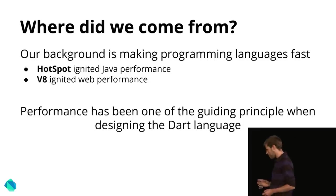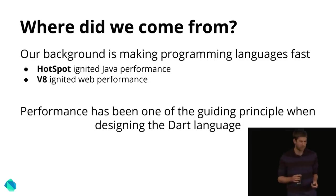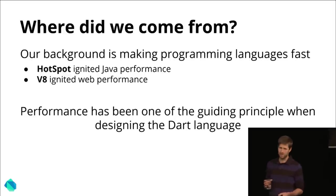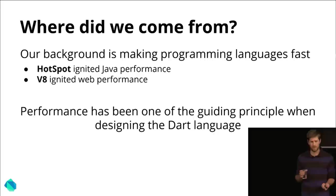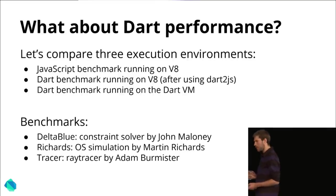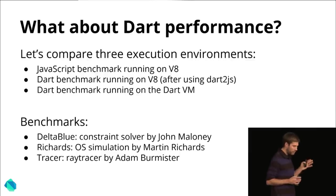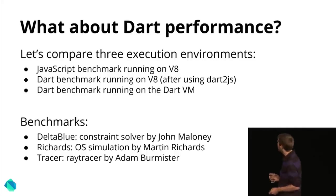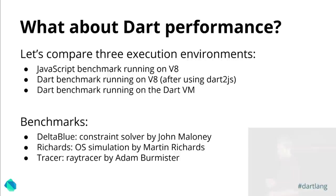To give a brief overview of performance: where does the team that designed Dart come from? Their background is making programming languages fast. They designed HotSpot, when Java was hardly slow. They designed V8, which started the web performance boost. So when we designed Dart, our guiding principle was performance. I'm going to compare three benchmarks: one running in V8, one running in V8 with a compiled version of the Dart code, and one running on the Dart VM. The benchmarks are Delta Blue — a constraint solver — Richards — simulating an operating system — and Tracer, a ray trace benchmark.